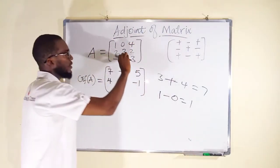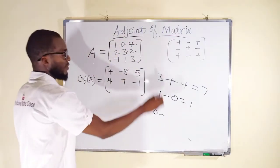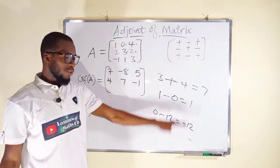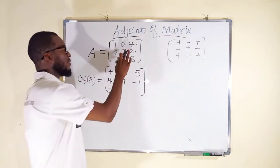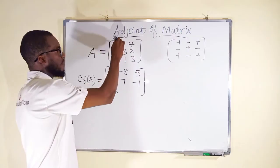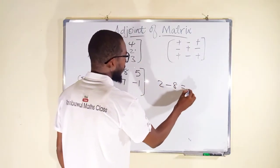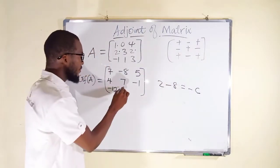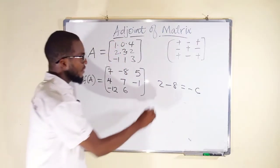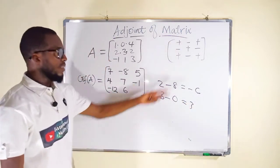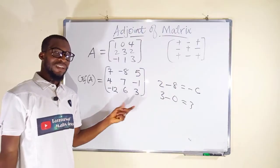For third row, first column: delete that row and column, find the determinant — 0×2=0 minus the other product gives negative 12; positive sign, cofactor is negative 12. For third row, second column: determinant is 1×2=2 minus 1×8=8, giving negative 6; negative sign changes it to positive 6. For third row, third column: 1×3=3 minus 2×0=0 gives 3; positive sign, cofactor is 3. These are all the cofactors.